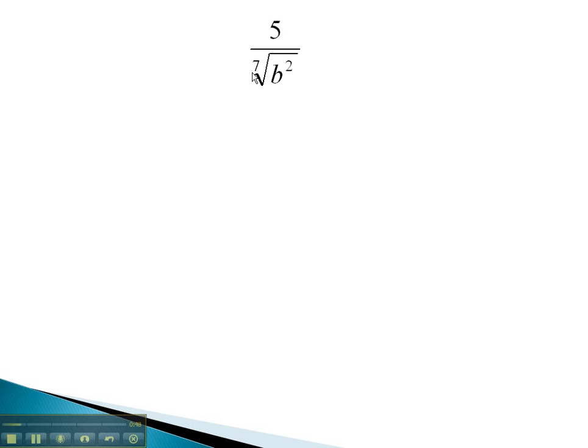In this problem, you notice we are working with the 7th root. This means we need to divide the exponent by 7. We currently cannot divide 2 by 7.